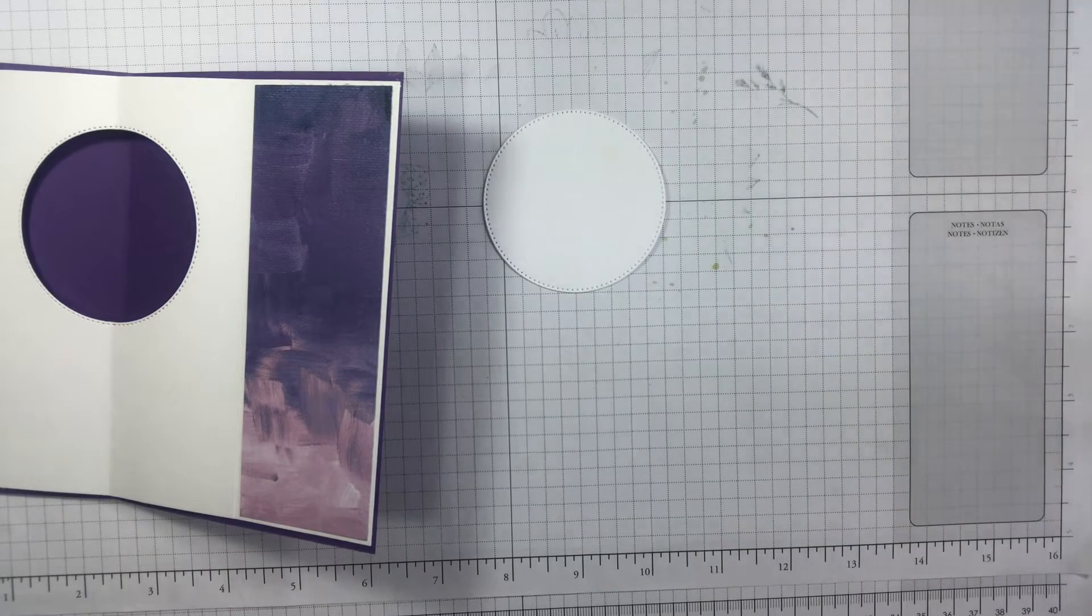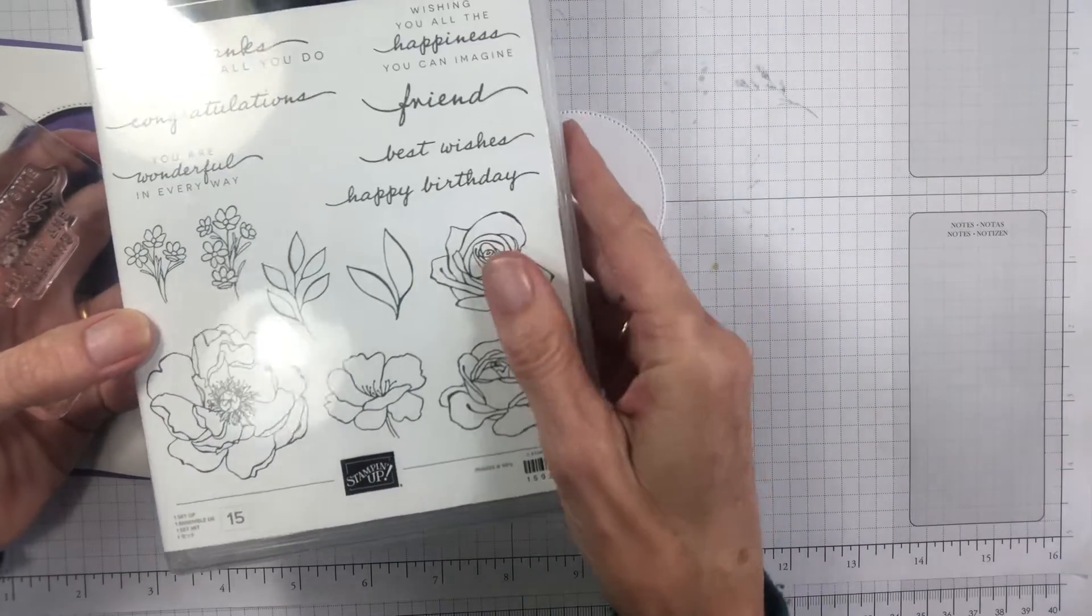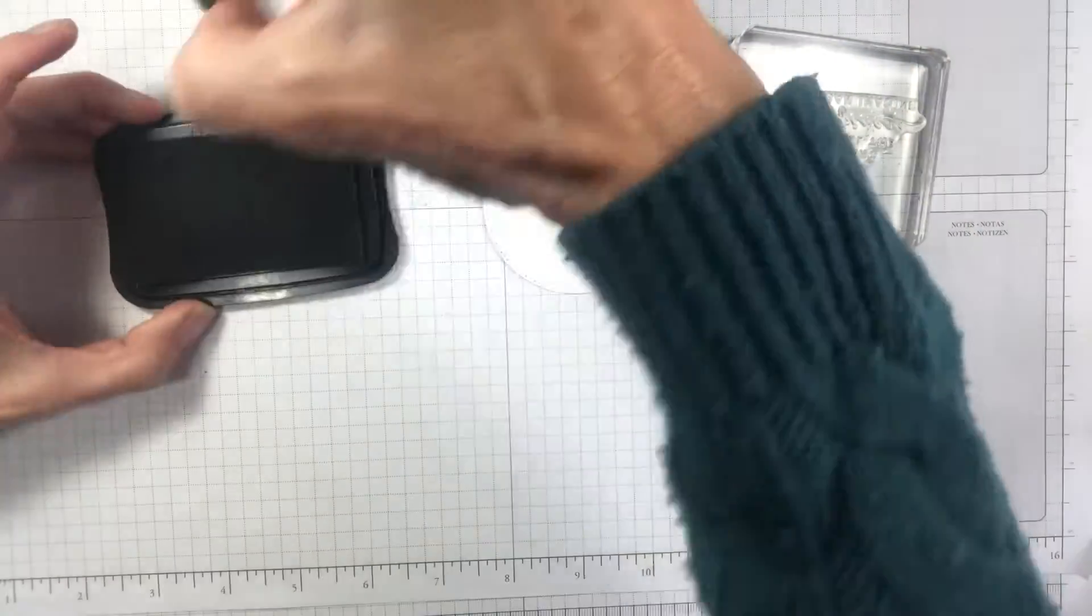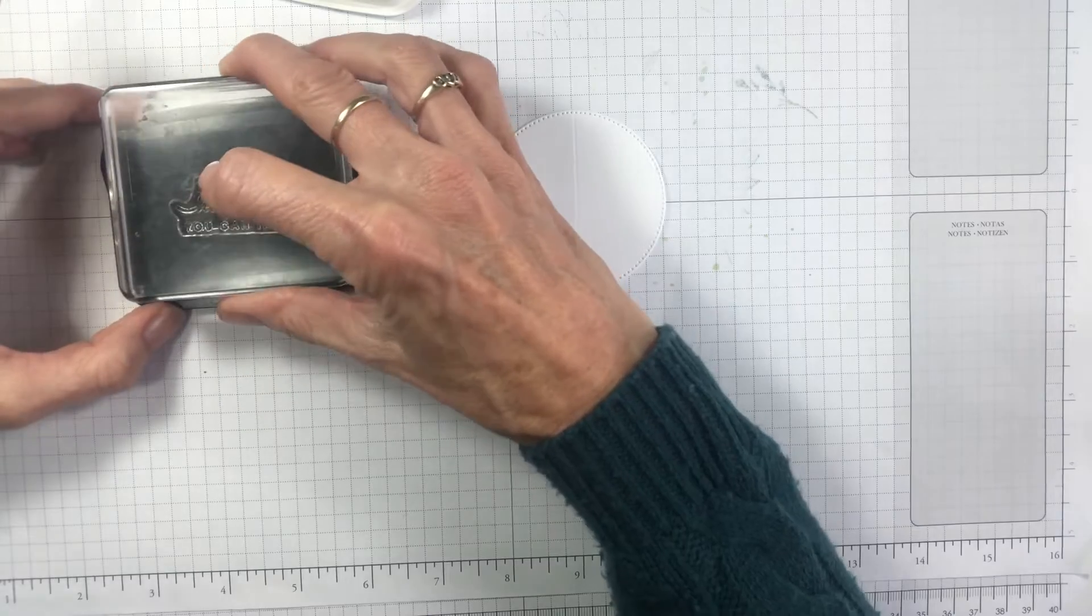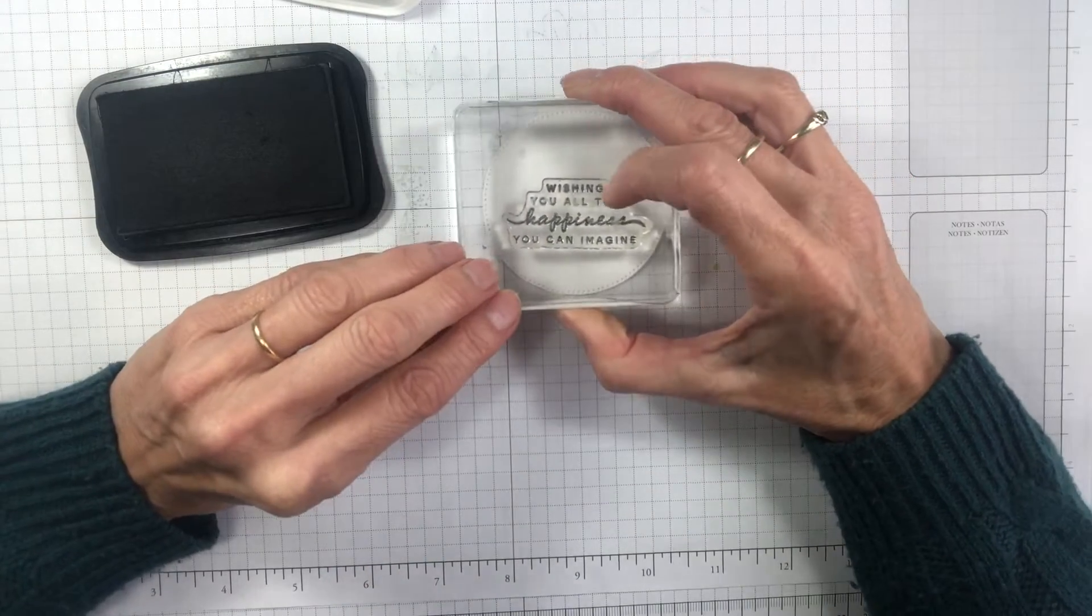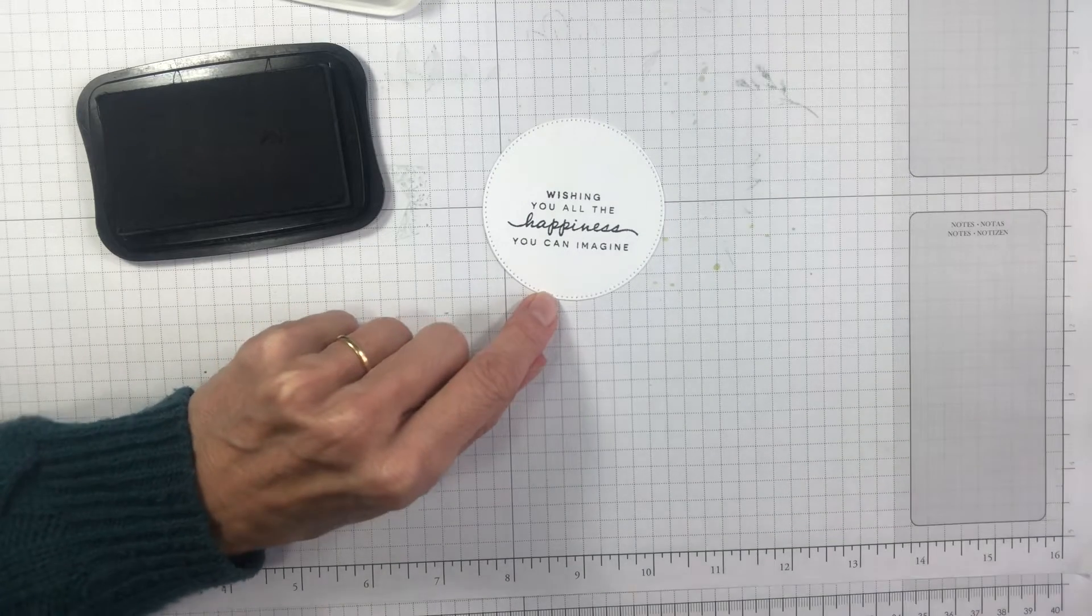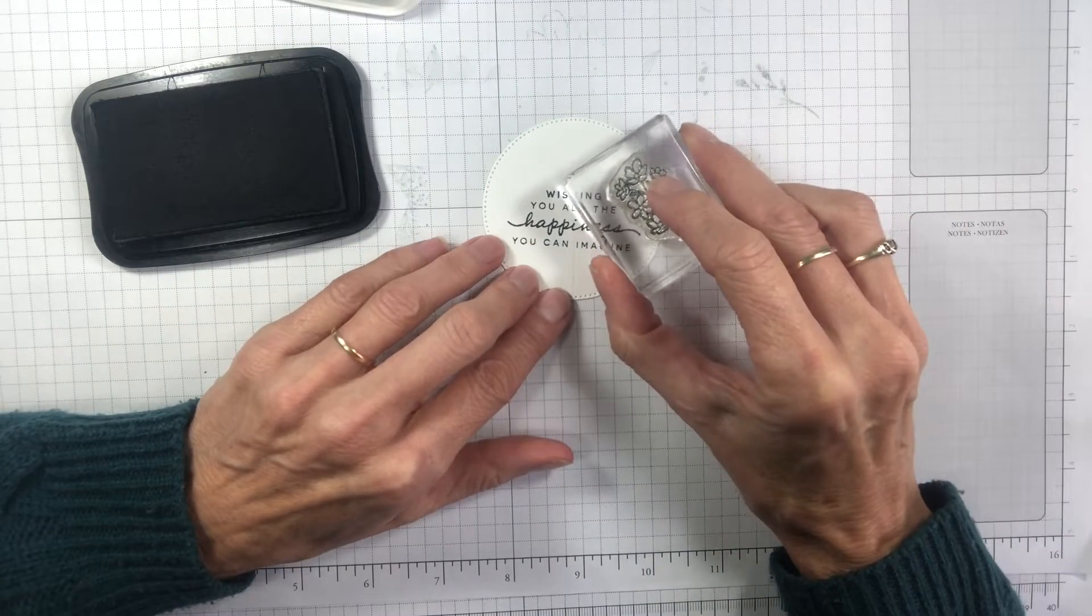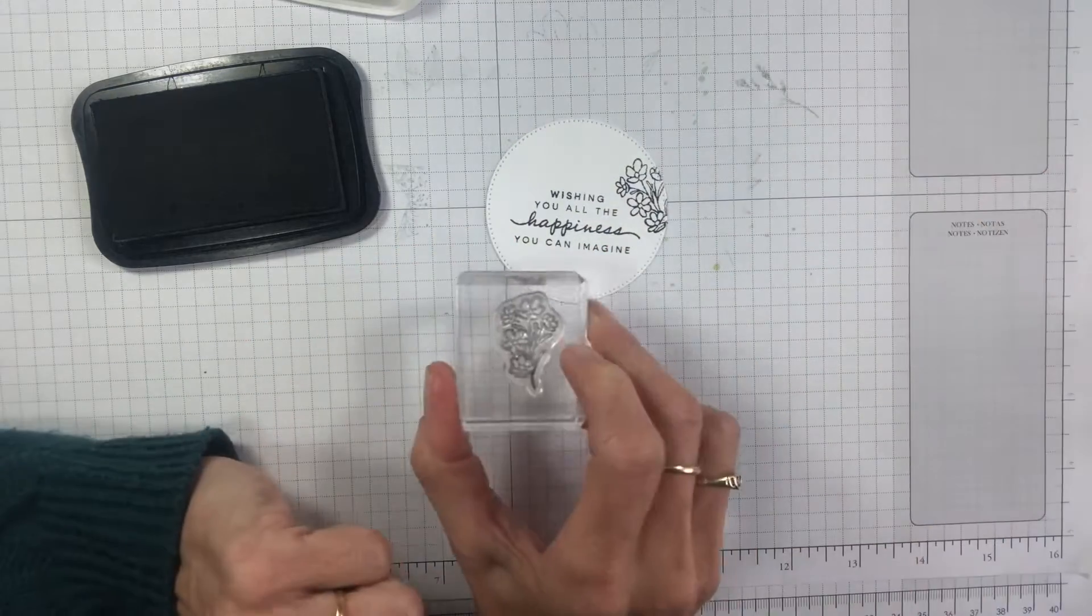So with your die cut circle you've had, make sure your line, the scored line, is going up and down. And we're going to just stamp our sentiment. I thought this was a lovely sentiment from the stamp set. So we're using this wishing you all the happiness you can imagine. So just use your tuxedo black. Make sure that it's facing the right way. Not that it matters too much. You can turn your circle around. Let's do it the right way. And also I'm going to use one of these tiny little flowers. Just stamp that offset. There we go. You can add another one if you wanted to. We're just going to add one.